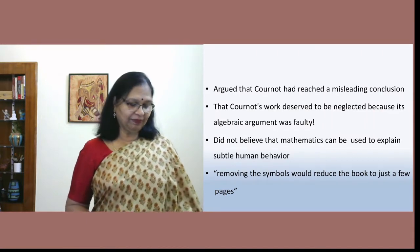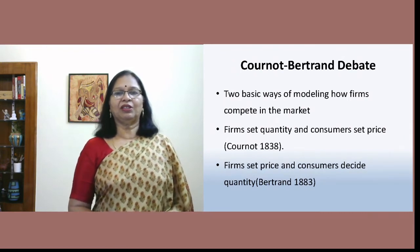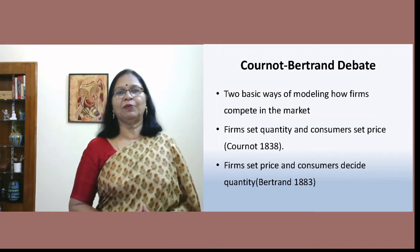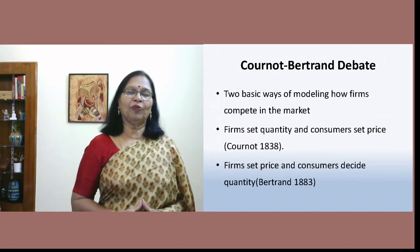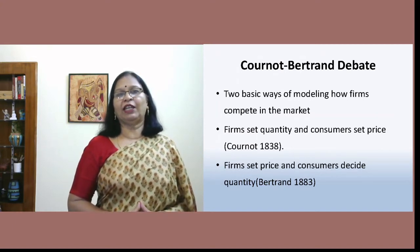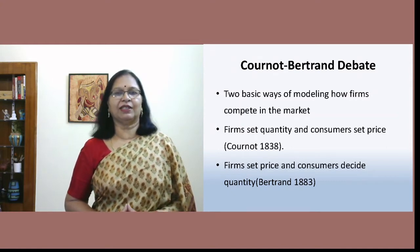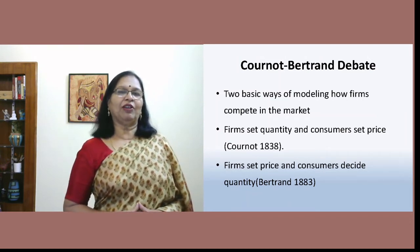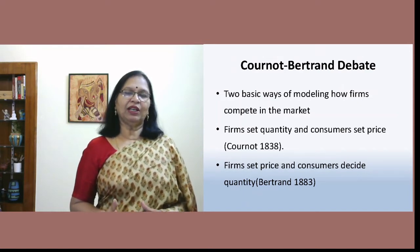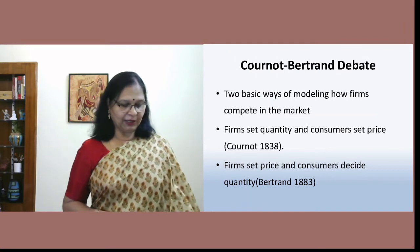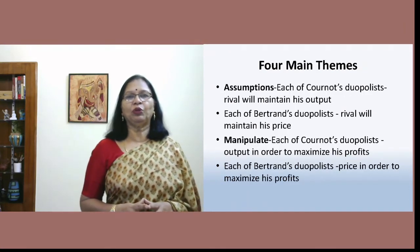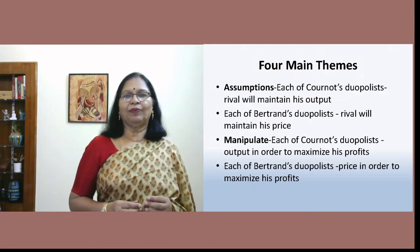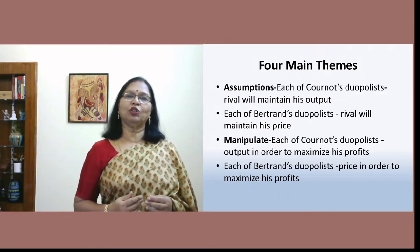There is the famous Bertrand-Cournot debate, which is about what firms can do in terms of prices and output. Cournot's argument was that firms will decide the output, and Bertrand's argument was that firms will decide the prices. This is the origin of the idea we teach in microeconomics — that a firm cannot decide both price and output. There are essentially four themes that originate from this Cournot-Bertrand debate: one is about assumptions, and the other is about how the two firms manipulate the market.